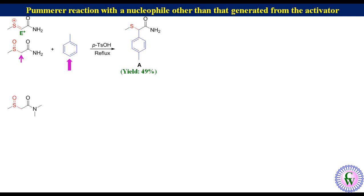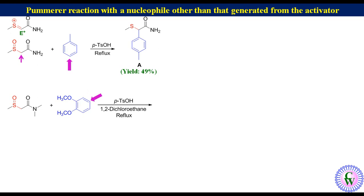Reaction of N,N-dimethyl 2-methylsulfenyl acetamide with 1,2-dimethoxybenzene in the presence of para-toluenesulfonic acid in 1,2-dichloroethane: there are two positions susceptible to electrophilic attack, but one position is more prone due to less steric hindrance. Thus the reaction leads to compound B as the major product with 42% isolated yield.